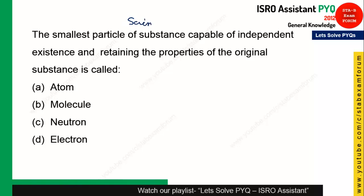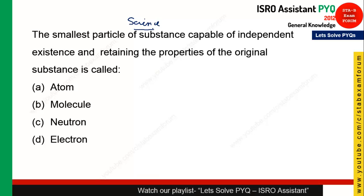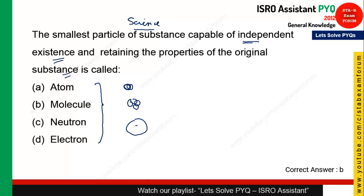The next question: what is the smallest particle of a substance capable of independent existence and retaining the properties of the original substance? An atom is a single independent unit but cannot independently exist on its own. A molecule is a combination of atoms and can exist independently while retaining original properties — for example, an oxygen molecule retains the properties of oxygen. Option B — molecule — is the correct answer.